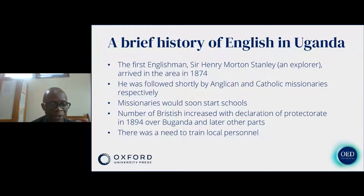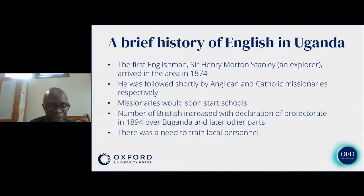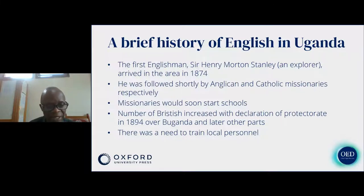Speaking English also came with schooling. The number of British increased when the British government declared a protectorate over Buganda in 1894, with other parts of Uganda following after. There was a need to train local personnel because the few British people around could not handle all the administration across the territory.